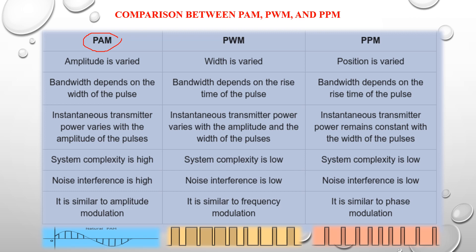In PAM, the instantaneous transmitter power varies with the amplitude of the pulses. In PWM, instantaneous transmitter power varies with both the amplitude and width of the pulses. In PPM, instantaneous transmitter power remains constant with the width of the pulses. Regarding system complexity: PAM has very high complexity, PWM has very low complexity, and PPM has low complexity.